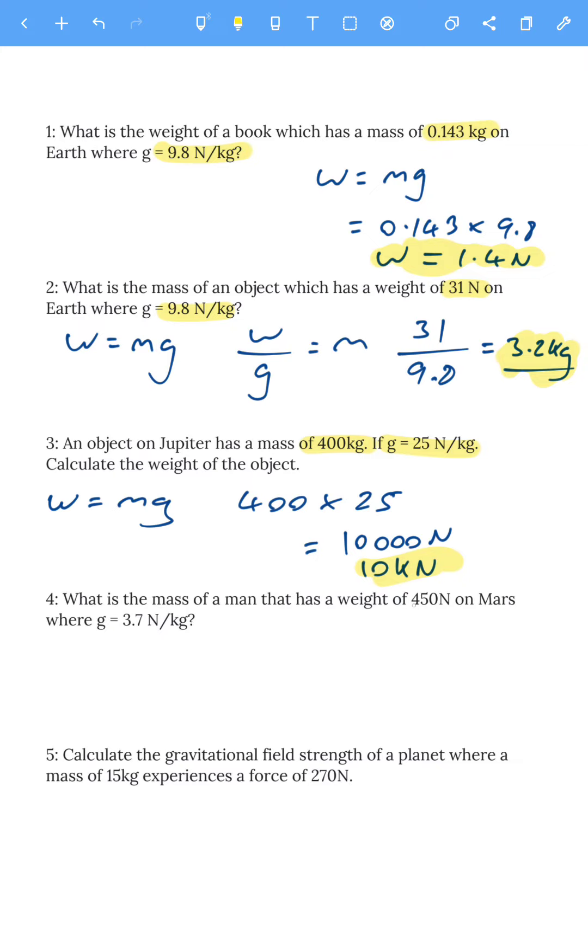Number four. What is the mass of a man that has a weight of 450 newtons on Mars, where gravitational field strength is 3.7 newtons per kilogram? We use W = mg and rearrange to find mass. We divide by g, so weight divided by gravitational field strength is the mass. We've got 450 divided by 3.7, so the mass equals 122 kilograms.